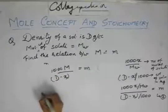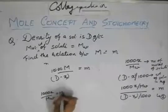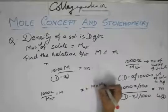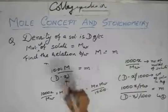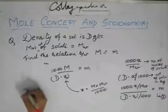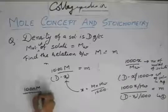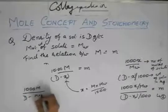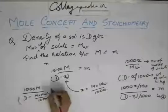And what was x? 1000x by mw was m, so x would be m into mw divided by 1000. Now put this x again over here, what would you get? You will get 1000m divided by d minus m into mw by 1000 is equal to m.